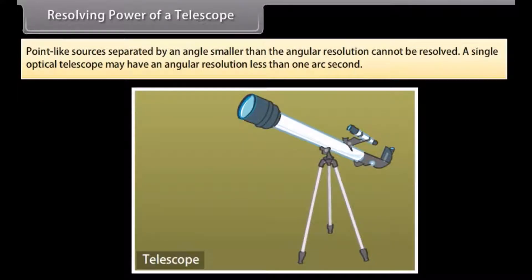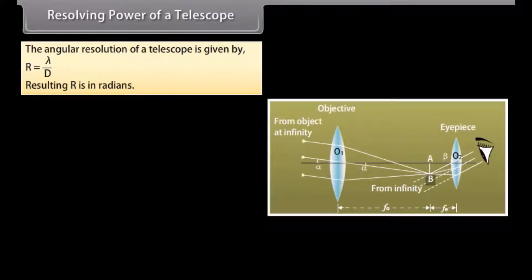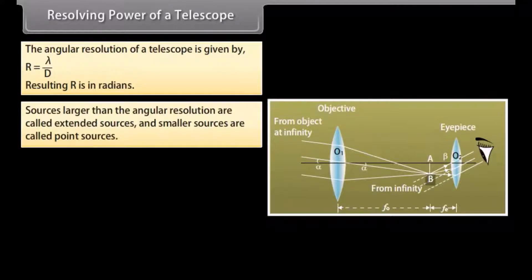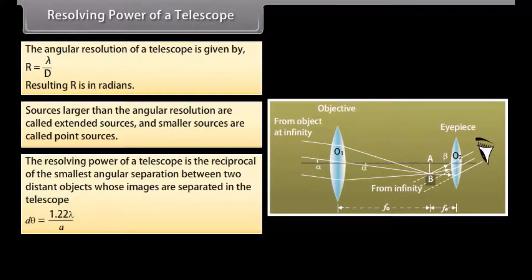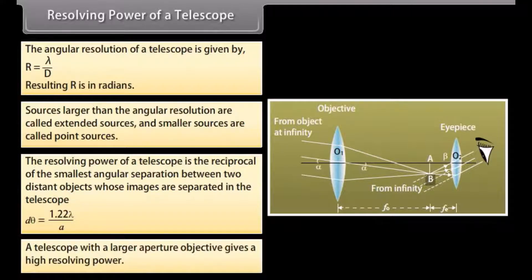Point-like sources separated by an angle smaller than the angular resolution cannot be resolved. A single optical telescope may have an angular resolution less than one arc second. The angular resolution of a telescope is r = λ/d, where λ is the wavelength of observed radiation and d is the diameter of the objective. The resolving power of a telescope is the reciprocal of the smallest angular separation between two distant objects whose images are separated, given by dθ = 1.22λ/a. A telescope with a larger aperture gives higher resolving power.